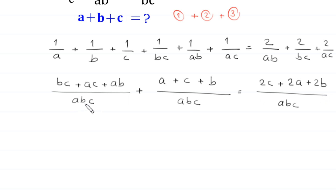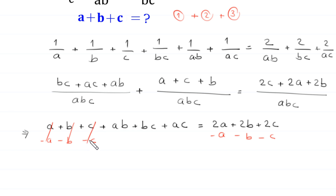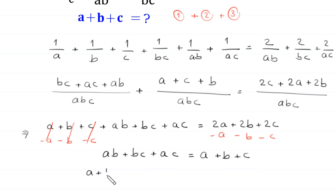Now we multiply both sides of this equation by the LCM abc. This gives us a + b + c + b + c + ab + bc + ac equals 2a + 2b + 2c. We subtract a, b, and c from both sides, so those cancel, and we are left with ab + bc + ac equals a + b + c.